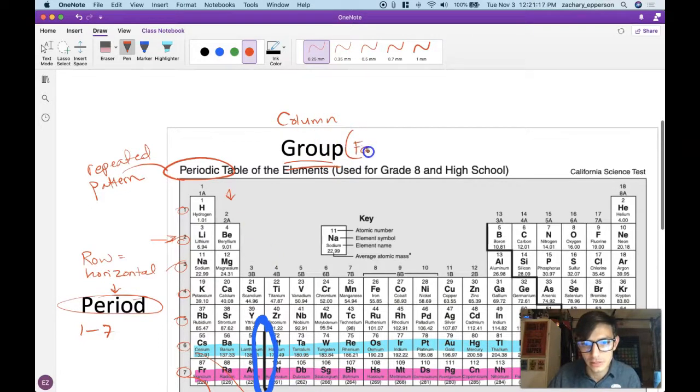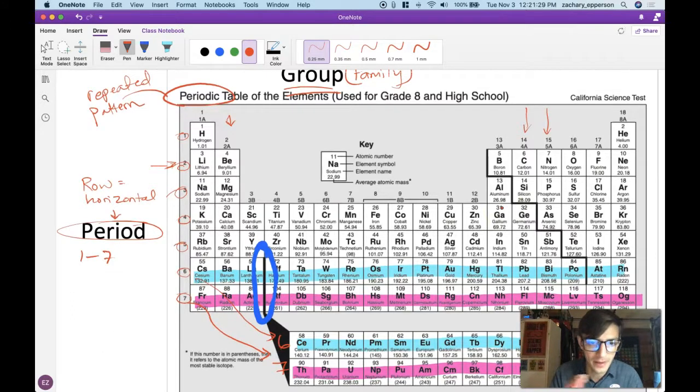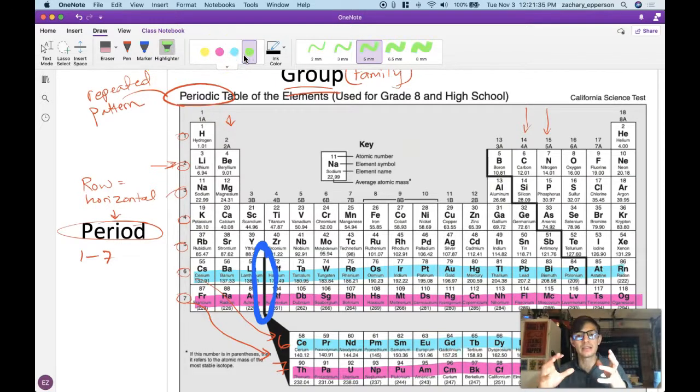Another term that we'll sometimes use is the word family. That's not as common, but you'll sometimes see that in a textbook. But the reason is because the group number or the family number actually has similarities. Everything that's in group two, right here, all react similarly when in the presence of other types of chemicals. And there's a reason for that, which we'll discover a little later. But we call them families because they react the same.